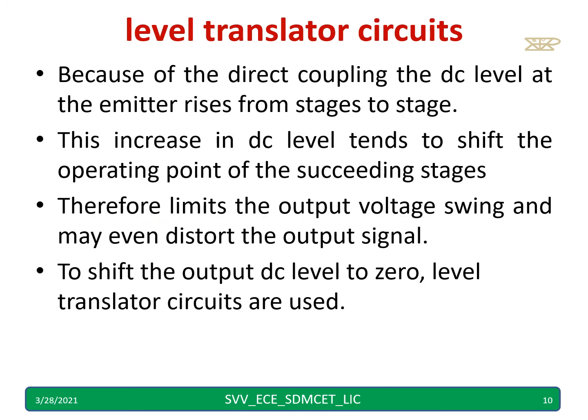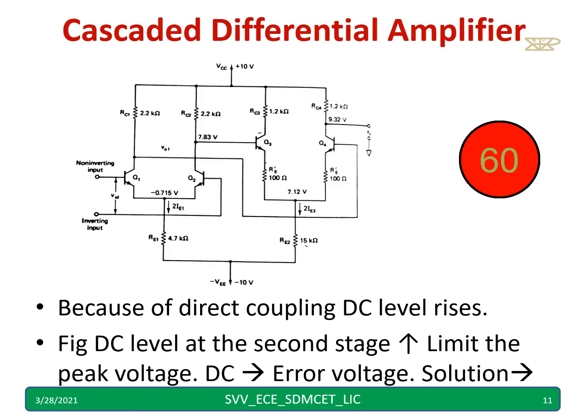And level translator used in the op-amp because the direct coupling is in op-amp circuits or blocks. Because of that, the emitter voltage rises from stage to stage. Therefore, a limiting circuit is needed or level shifting is needed. So we use a level translator for that. For example, you can observe in this. This voltage 7.83, next stage it has become 9.32. Like that, if you take another stage, again it will increase the DC voltage. So because of this direct coupling, the level will start increasing or DC voltage will increase from one stage to the next stage.